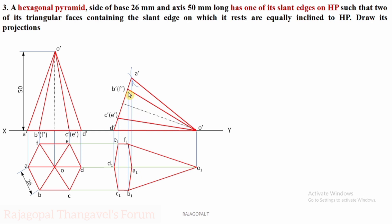Next, slant edges. O'F' is already visible, so O1F1 is a continuous thick line. Similarly O'A' is visible, so O1A1 is a visible continuous thick line. The remaining slant edges are O'B', O'E', and O'C'. Always remember: in this view's front view, below the axis we have three slant edges — O'C', O'E', and O'D'.